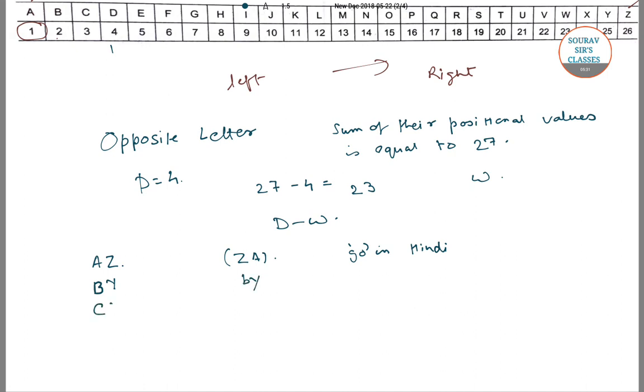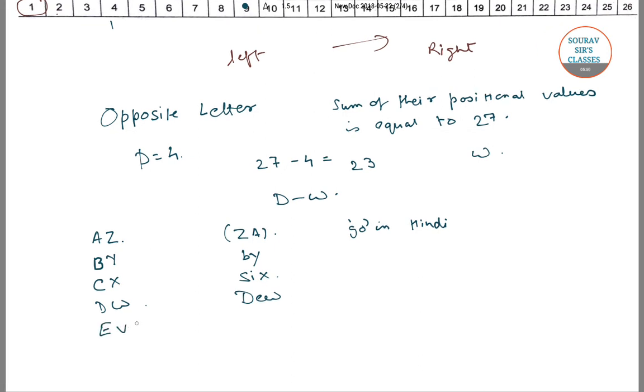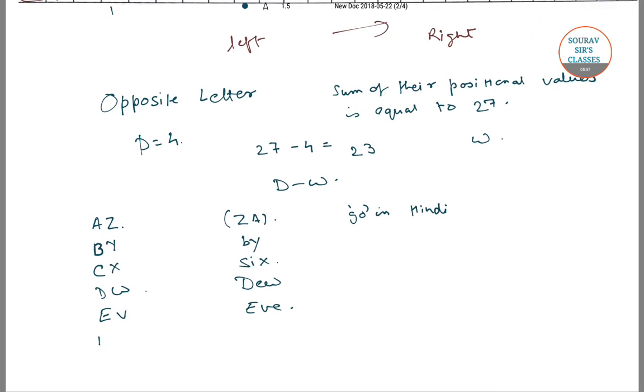Opposite of C is X, so we can remember that it sounds similar to six. Opposite of D is W, so remember it with the word DO. Opposite of E is V, so remember it with the word EVE. F is U, so we can use the word FULL to remember it.